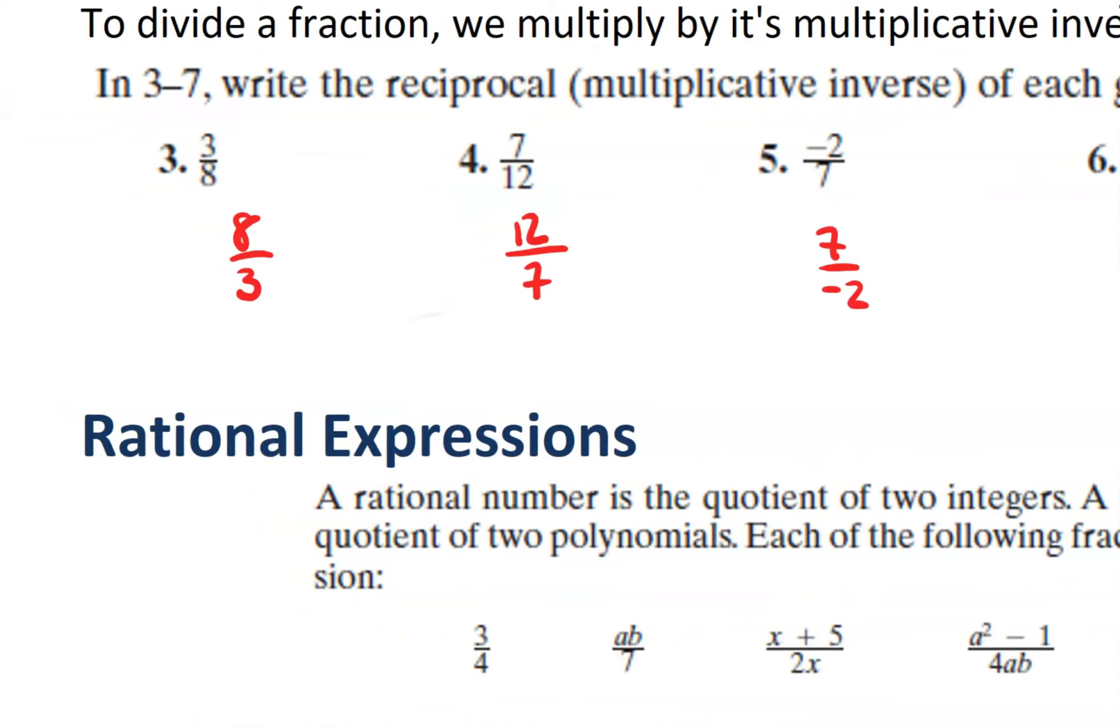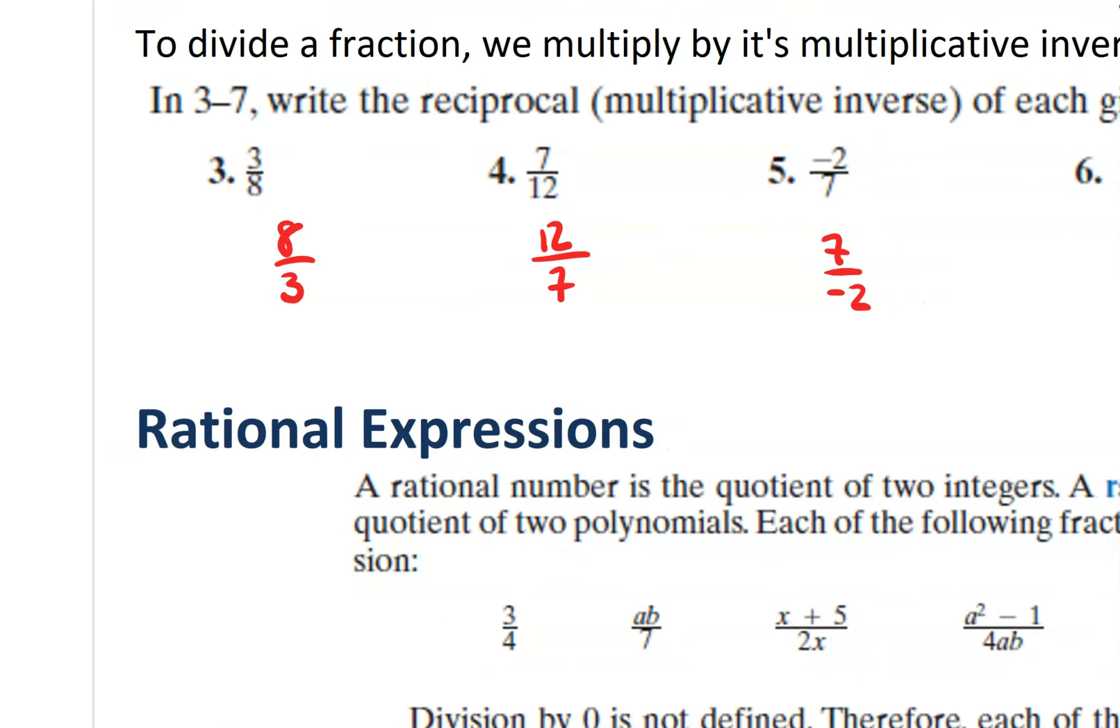And these are the reciprocals. Let's look at them one at a time. For question 3, 4, and 5, I don't think there's much of a challenge. We see that we have the fraction 3 over 8. If we flip that fraction over, we'd have 8 over 3. If I were to multiply these two together as a quick check, 3 over 8 times 8 over 3 would equal 24 over 24, which reduces to the number 1. So we've got a good reciprocal. Same thing with number 4. 7 over 12. If we flip that, we get 12 over 7. And the check would perform the same way.